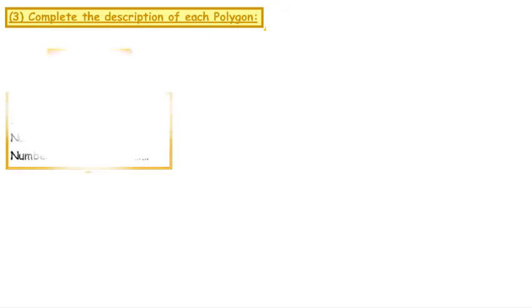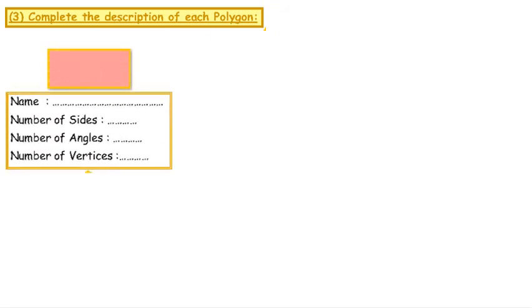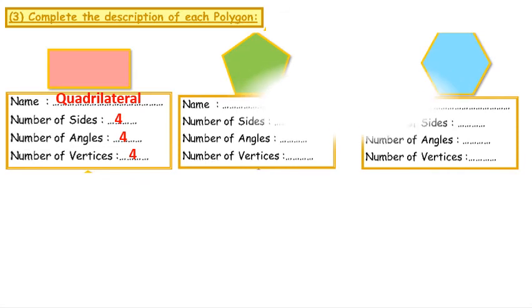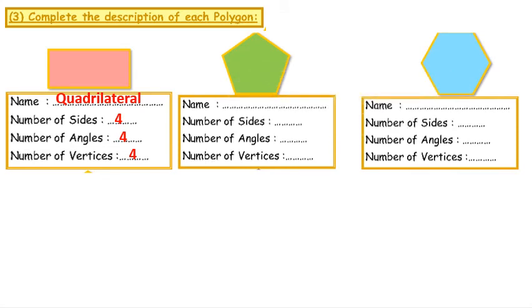Now complete this table. Number 1: A quadrilateral, because it has 4 sides, 4 angles, and 4 vertices. Number 2: A pentagon, because it has 5 sides, 5 angles, and 5 vertices.